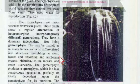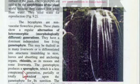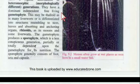The gametophyte may consist of leaves and absorbing/anchoring organs called rhizoids, as in mosses and some liverworts. Rhizoids are used for absorption like roots. The gametophyte produces the sporophyte, which is a less conspicuous generation, partially or totally dependent upon the gametophyte for nutrition. The sporophyte generally consists of foot, seta, and capsule.